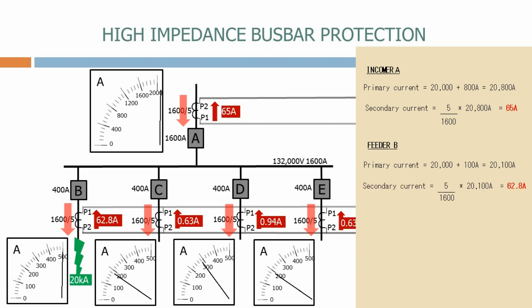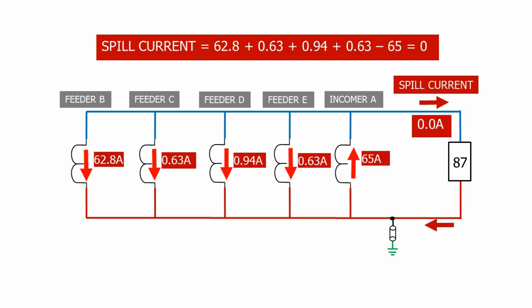The other feeder currents remain unchanged. Looking at our equivalent circuit again, the currents are still balanced because the increased current on the faulted feeder B has been offset by the current flowing through incomer A. Therefore the spill current is still zero and the relay does not operate.